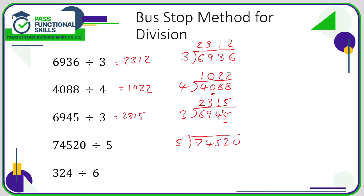7 divided by 5 is 1 with a remainder of 2, which gets parked on the next number. 24 divided by 5 is 4 with a remainder of 4, which gets parked on the next number. 4s into 45 is 9. Now, 2 divided by 5 — remember this is not 5 divided by 2. How many fives go into 2? They don't, so we write a zero. Whenever the number inside the bus stop is less than the number outside, write a zero, and that number carries forward and gets parked on the next number. So it's now 20 divided by 5, which is 4.